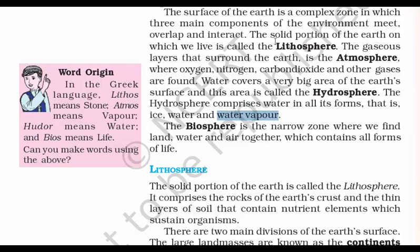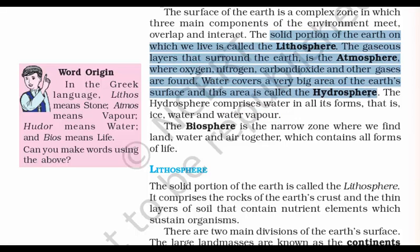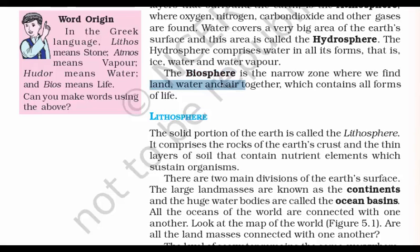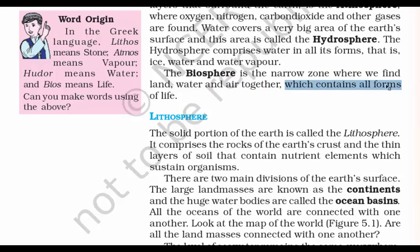Now combining all of the three forms, something called biosphere. So biosphere is nothing but the combination of land, water and air, which contains all forms of life — meaning all the living organisms that are there on planet Earth.